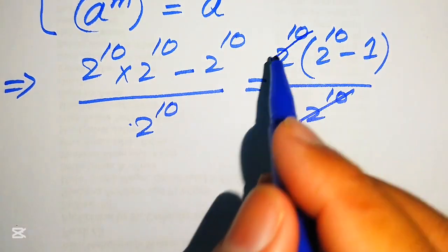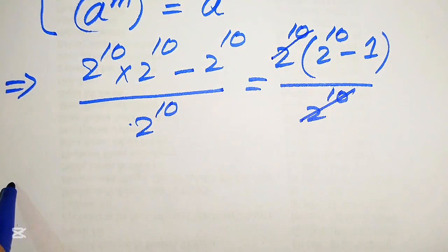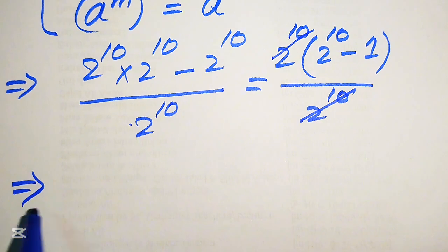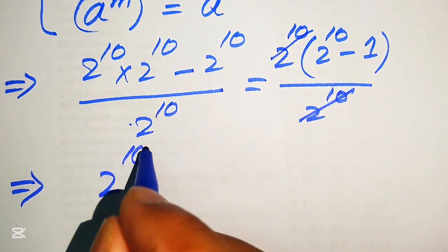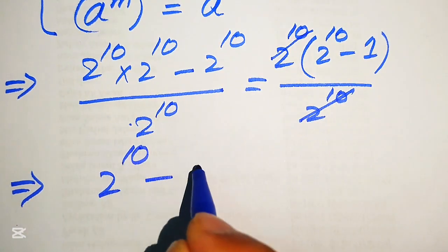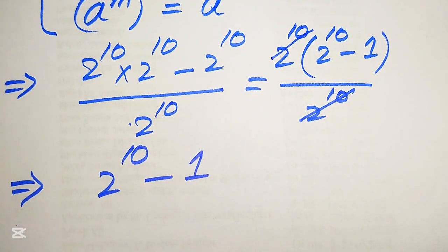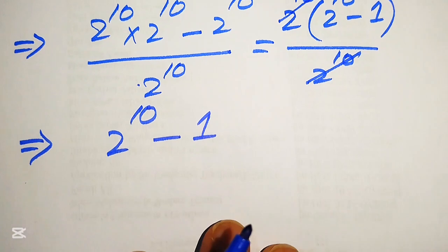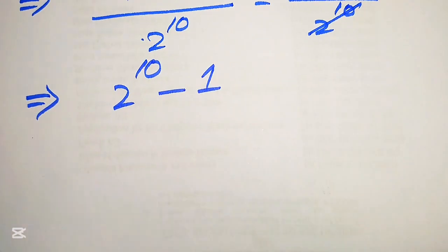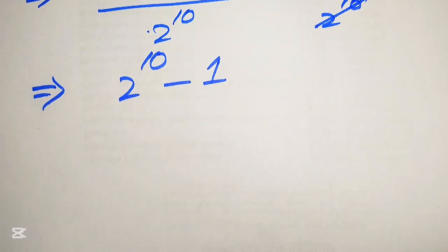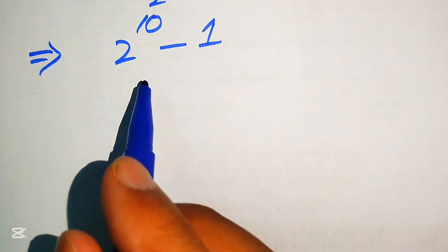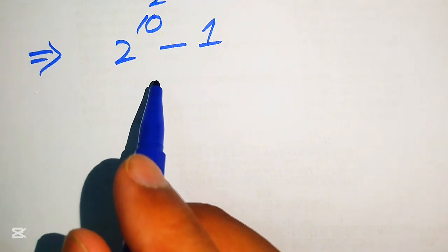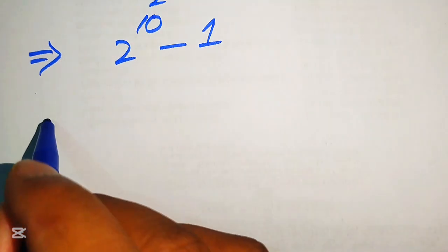The 2^10 in the numerator cancels with the 2^10 in the denominator, leaving us with 2^10 − 1. Our next step is to find the value of 2^10, and then subtract 1 at the end.